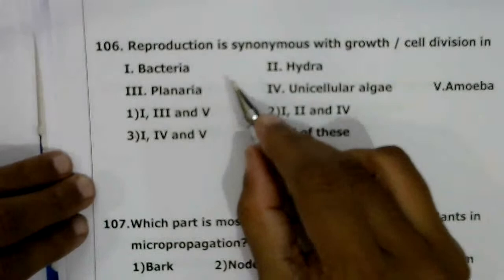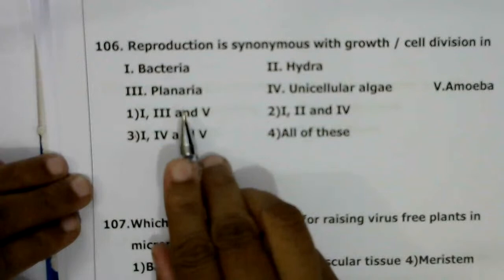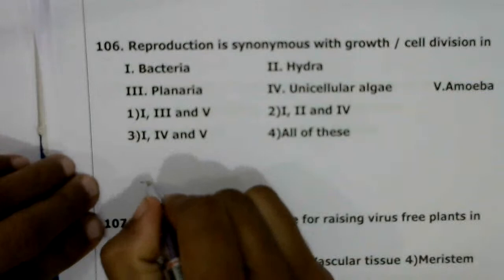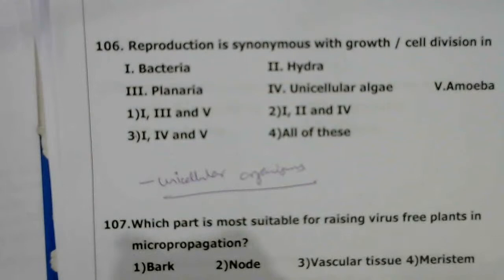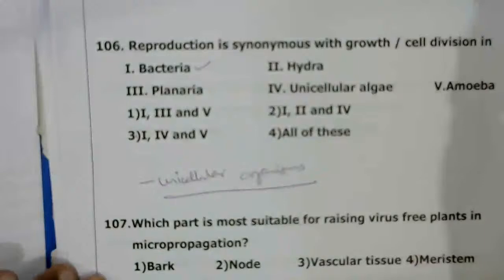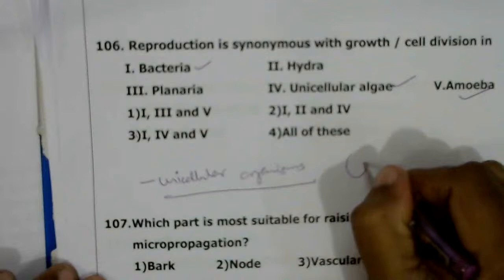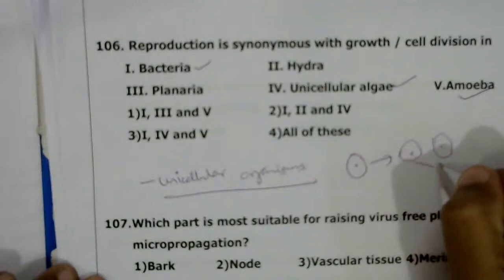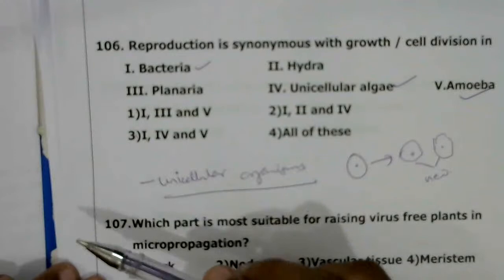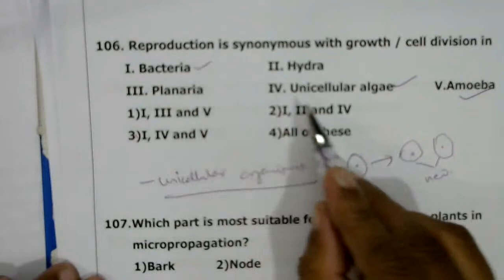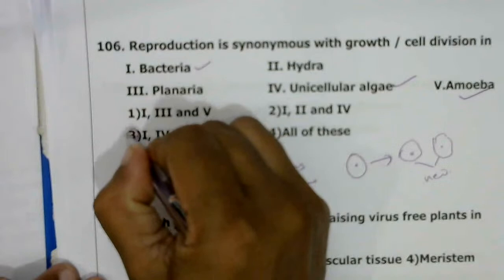Next question: reproduction is synonymous with growth or cell division in which organisms — bacteria, hydra, planaria, unicellular algae, or amoeba? In unicellular organisms, when a single cell divides into two daughter cells, both grow as new organisms, so the number of organisms increases — this increase is also considered growth. Reproduction is synonymous with growth in bacteria, unicellular algae, and amoeba. The correct answer is the third option.